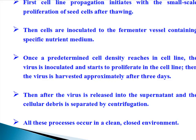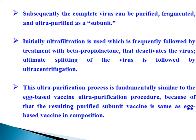Subsequently, the complete virus can be purified, fragmented, and ultra-purified as a subunit. Initially, ultrafiltration is used, which is frequently followed by treatment with beta-propiolactone that deactivates the virus. Ultimate splitting of the virus is followed by ultra-centrifugation. This ultra-purification process is fundamentally similar to the egg-based vaccine ultra-purification procedure. Because of that, the resulting purified subunit vaccine is the same as egg-based vaccine in composition.